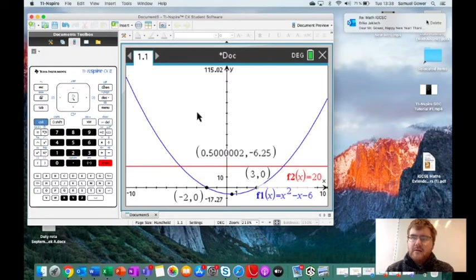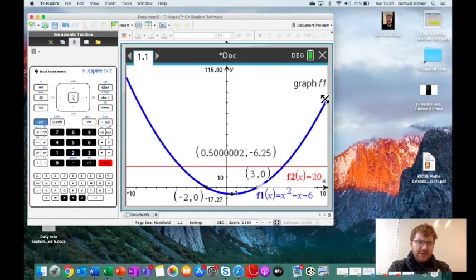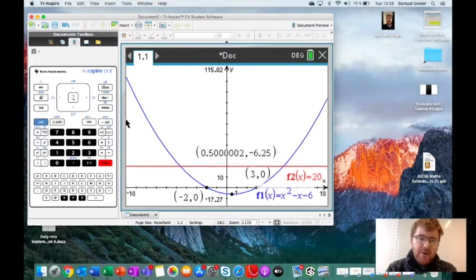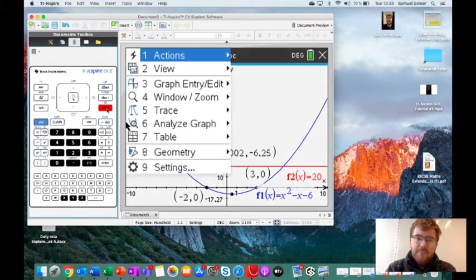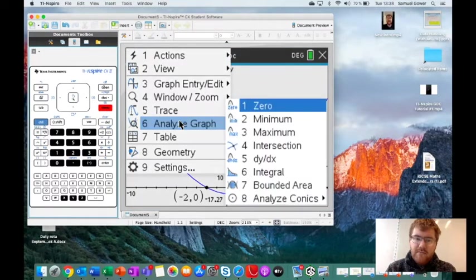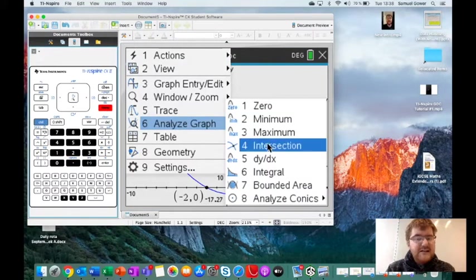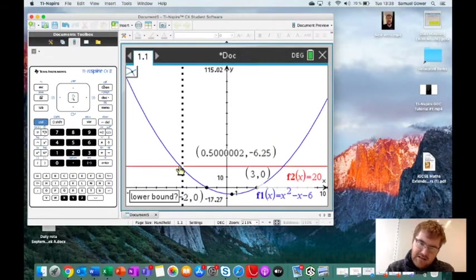What you can do is actually use this calculator to solve the two equations. When one equation is equal to another equation, you can then actually solve and work out the value of the answer that solves both equations. Again, it will go in the same place: Menu, Analyze Graph, this time Intersection.